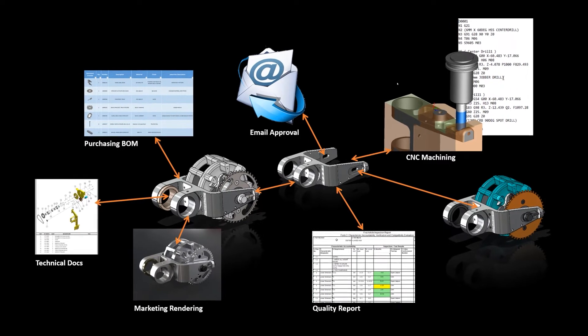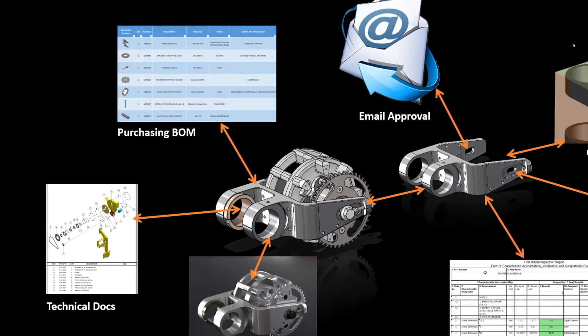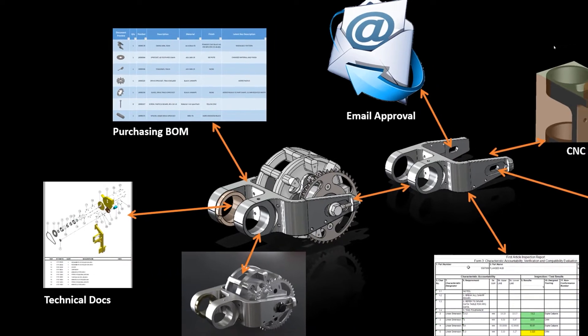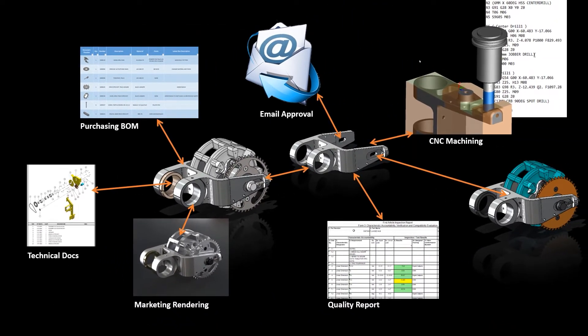Assembly to part models, to drawings, and to BOMs — let's not forget about the connection to documentation, spare parts lists, manufacturing process sheets and instructions, as well as customer-facing documentation. Change something in a part model or assembly model and the ripple effects through the ancillary documents are incredible. The sheer number of touch points that a company needs to ensure are properly adjusted from just one change can be enormous.